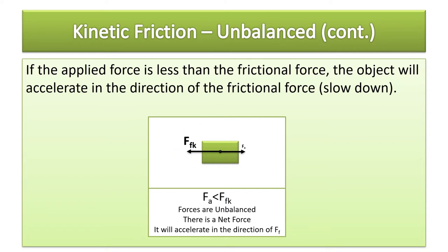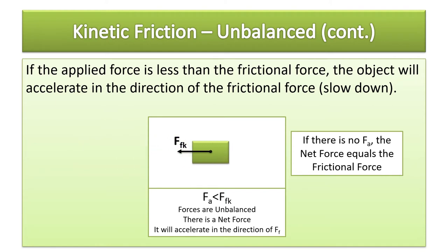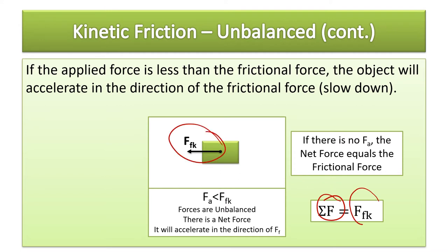But most of the time there won't be an applied force. If there is no applied force, the net force is equal to the frictional force. The thing is just sliding to a stop — it's already in motion and then slides to a stop. The weight and the normal force are balancing each other out, so the net force equals the frictional force. That means MA is equal to the frictional force, μFN, the normal force.